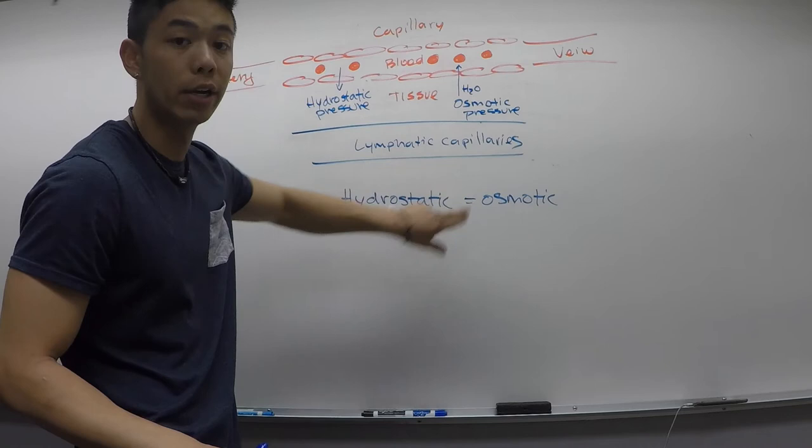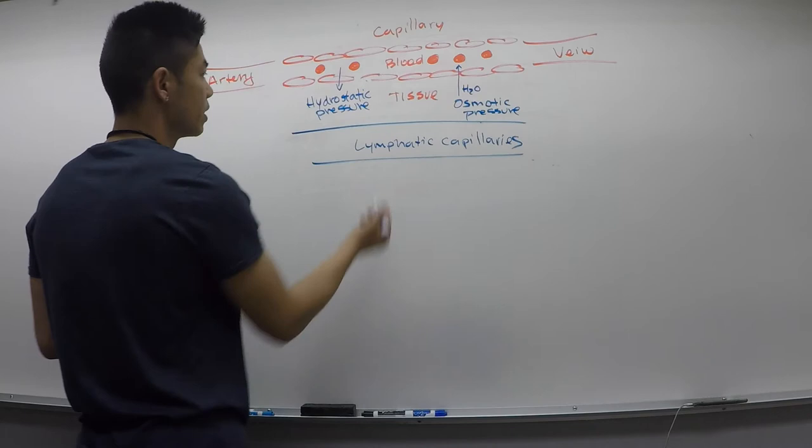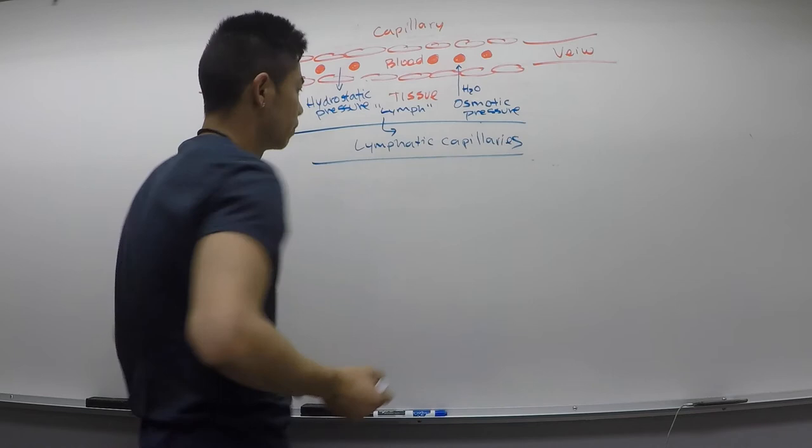For this instance, we know that the hydrostatic pressure is going to be greater than our osmotic. So we're going to have fluid flowing out of our blood vasculature, and this is going to be known as lymph. This lymph flows out.